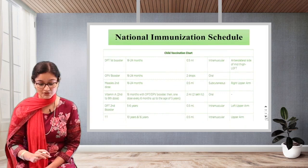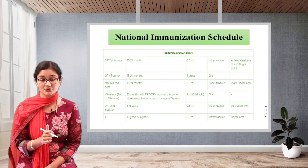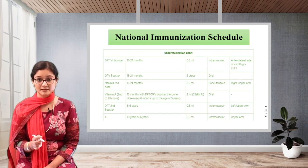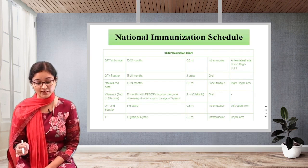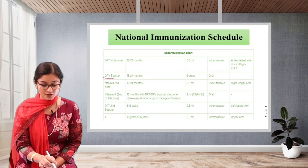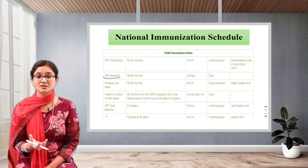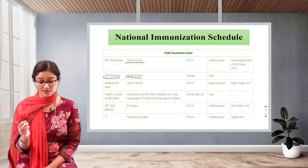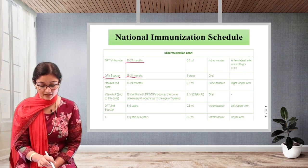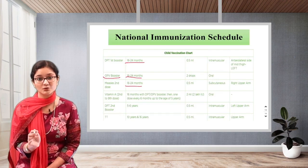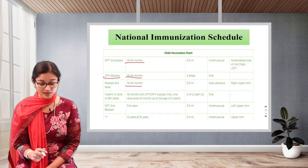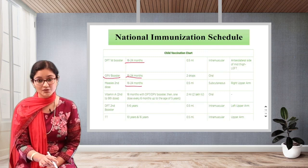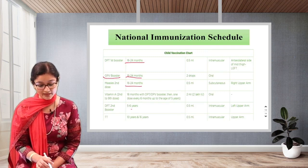Next is about booster doses for the child. DPT first booster dose is given at 16 to 24 months — 0.5 ml intramuscular at the anterolateral side of the mid-thigh left. OPV booster is also given at 16 to 24 months — booster doses are given to enhance immunity in the child. Measles second dose is also given between 16 to 24 months, 0.5 ml subcutaneous in the right upper arm. Vitamin A — second to ninth doses — is given from 16 months with DPT, then one dose every 6 months up to 5 years.